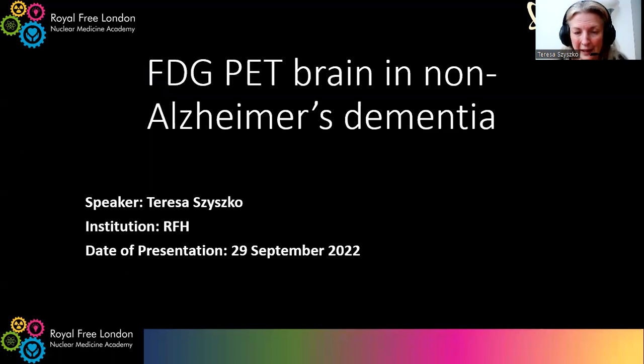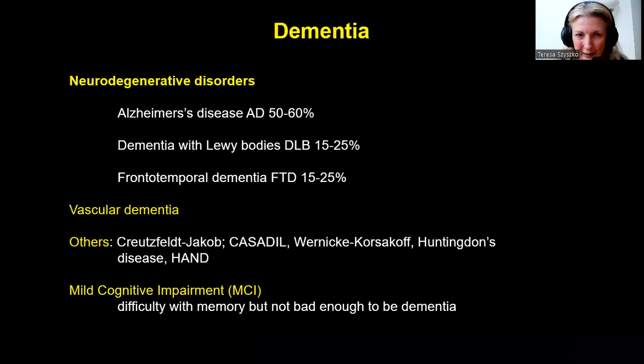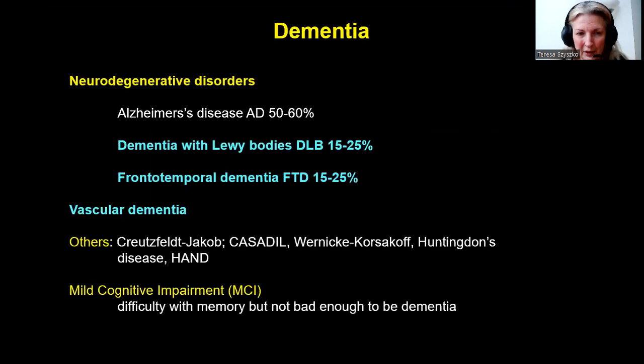Hello, my name is Teresa Shishko and today I'm going to be talking about FDG PET brain in non-Alzheimer's dementia. There are three predominant neurodegenerative disorders. You will have learned all about Alzheimer's disease, but today I'm going to talk about Lewy body dementia, frontotemporal dementia, vascular dementias, and other rarer dementias.